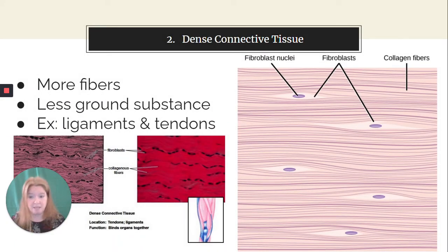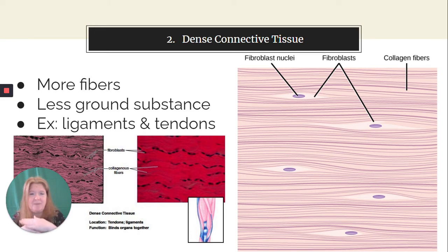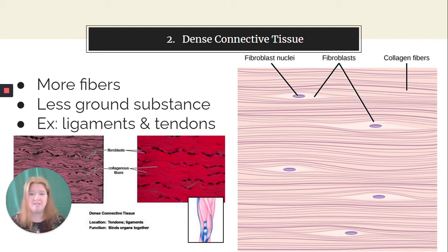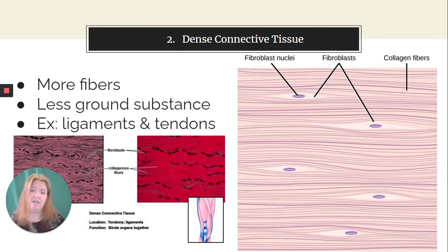Complete opposite is dense connective tissue. Look at this picture — look at all those collagen fibers, tightly packed together. It gives it durability and strength. There are a lot more fibers and less of the ground substance. This makes up things like ligaments and tendons, which need that strength — bone held tightly to bone, and muscle held tightly to bone. Dense connective tissue fibers packed in real tight give it durability.